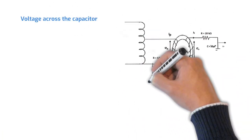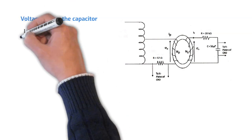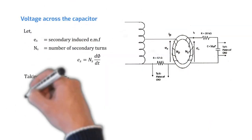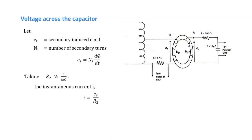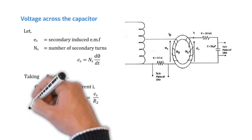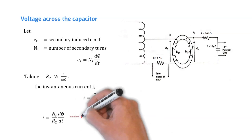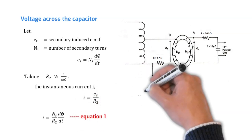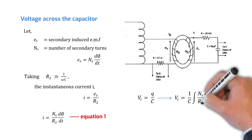Let's derive an equation for the voltage across the capacitor. Starting from the equation for the secondary induced EMF, we can derive an equation for the current through the capacitor as shown in equation 1. Hence, the voltage across the capacitor can be derived as this.